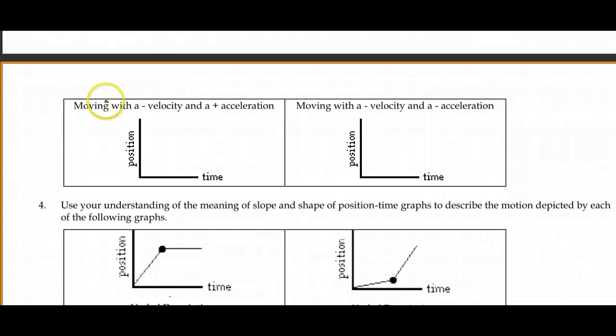Okay, so let's check the next one here. Now we're moving with a negative velocity, that means we're going down the graph, and a positive acceleration. Now again, those two are opposites, so we're going to slow as we move. We're going to start out up here, and we're going to be moving downward, and we'll find that our spacing gets closer and closer together.